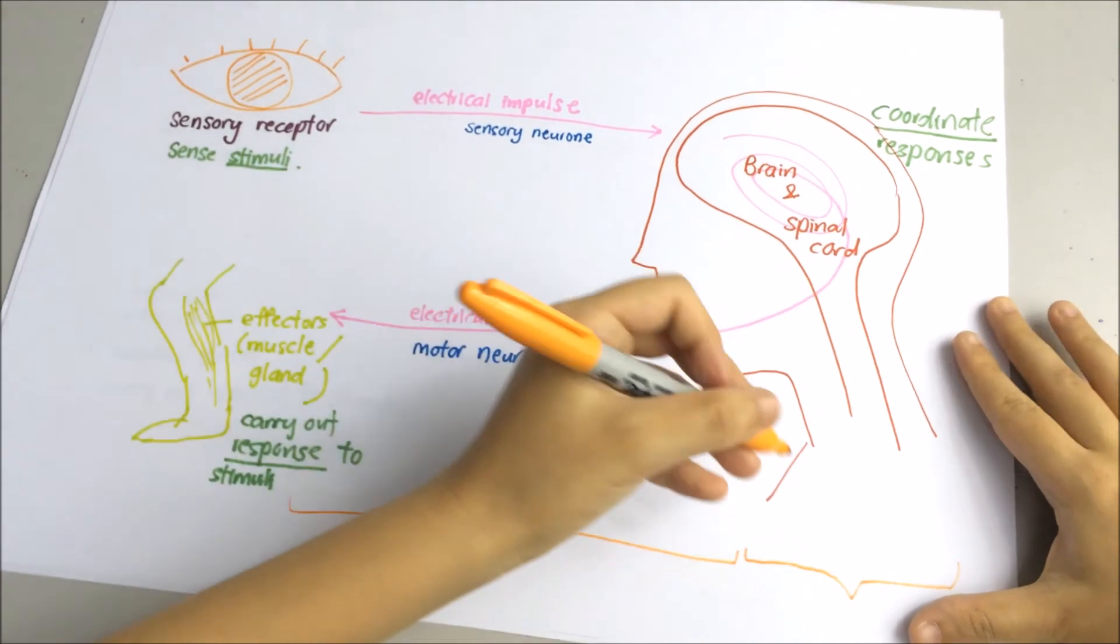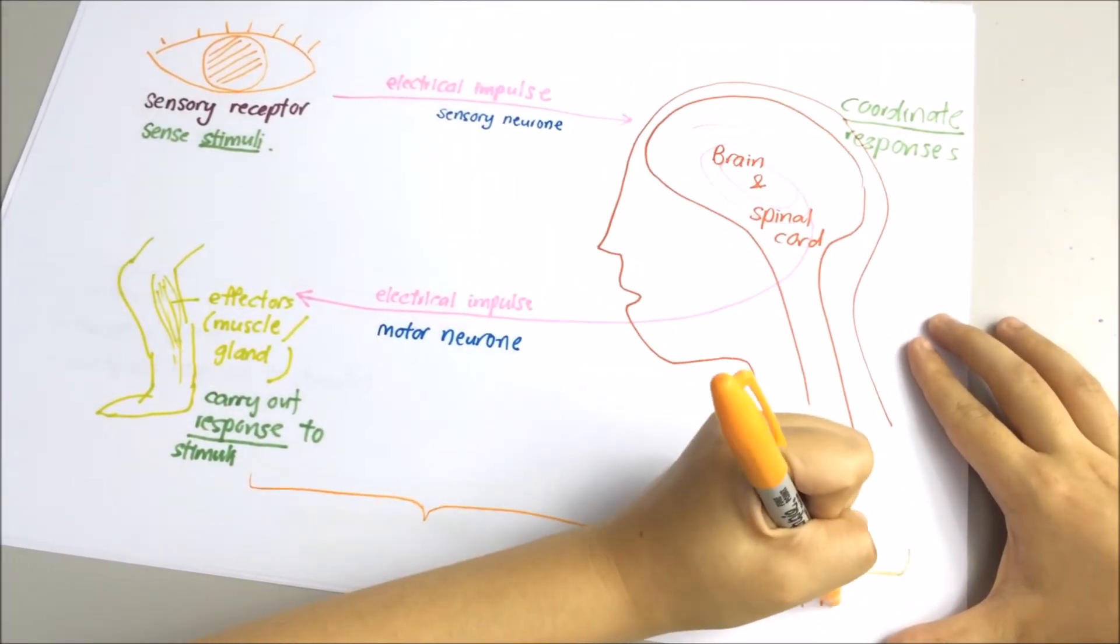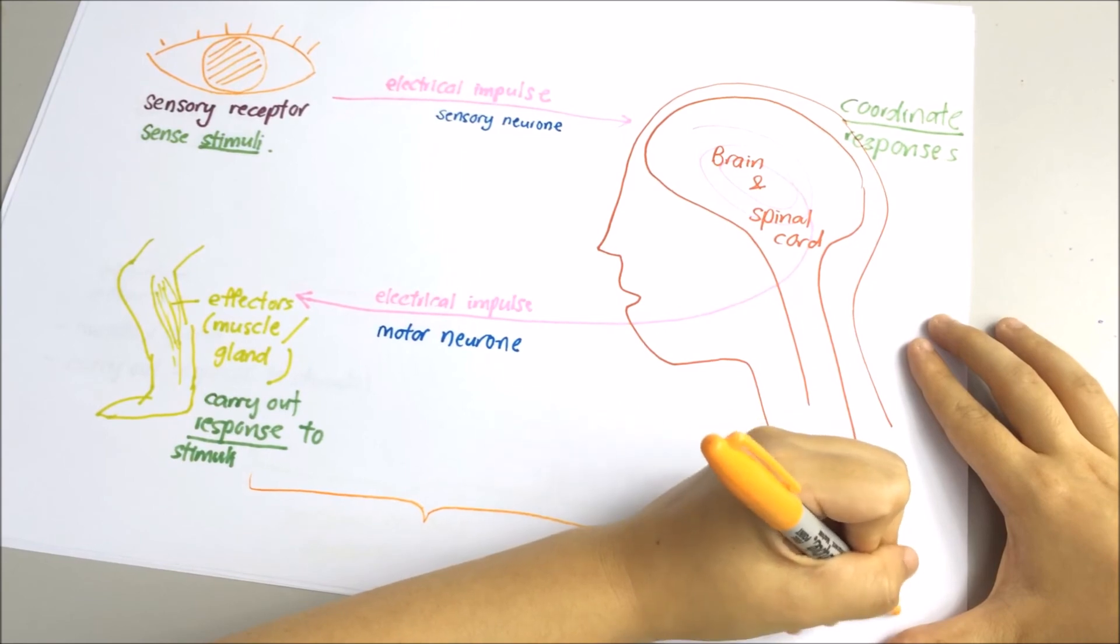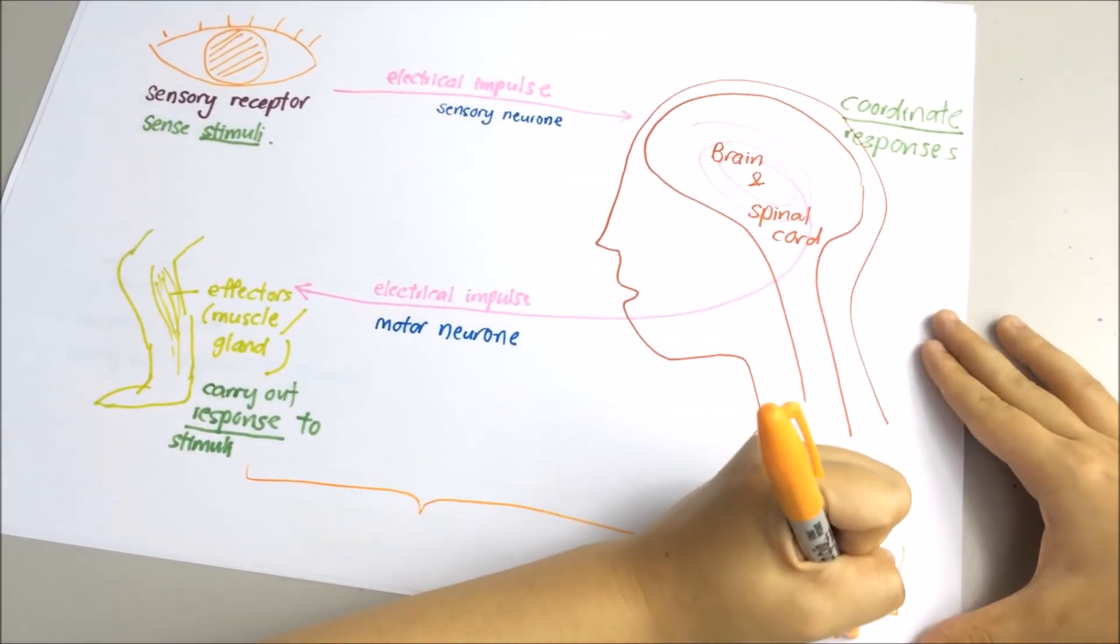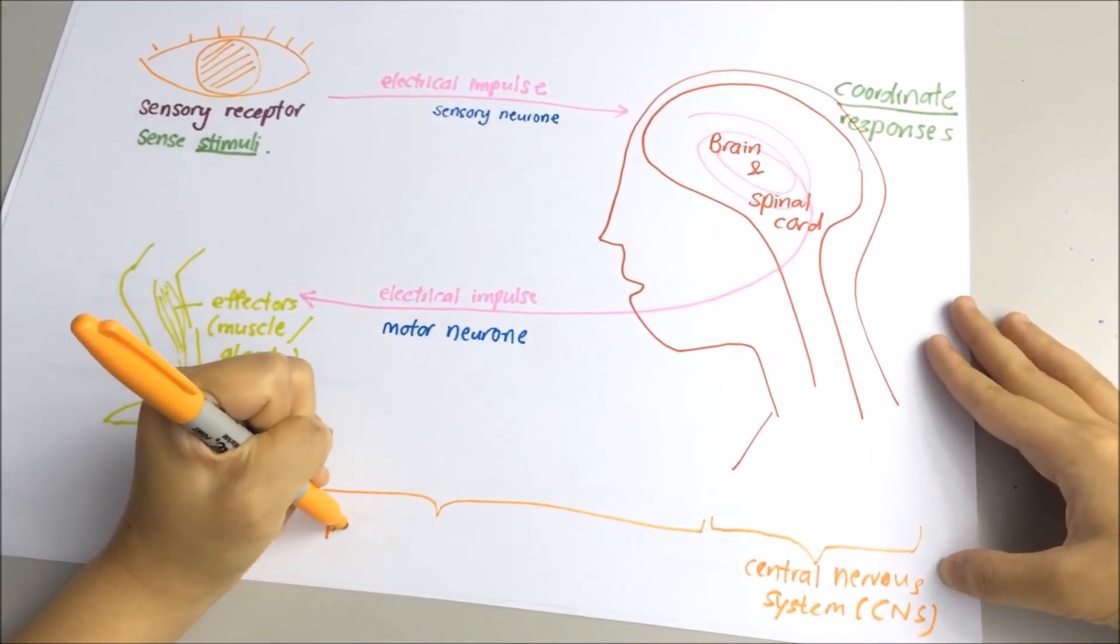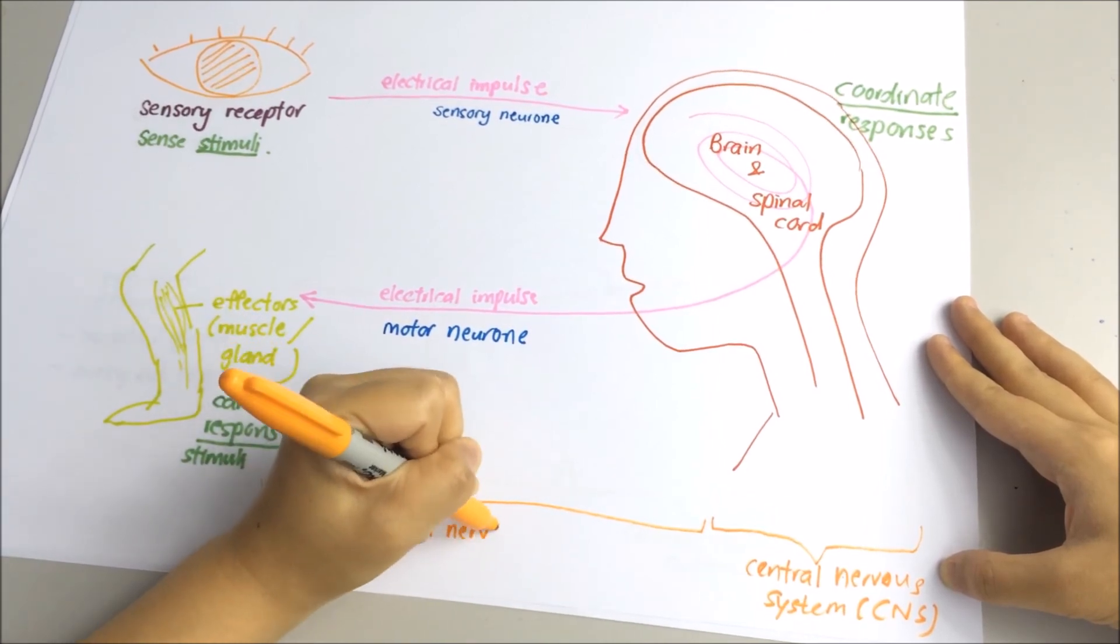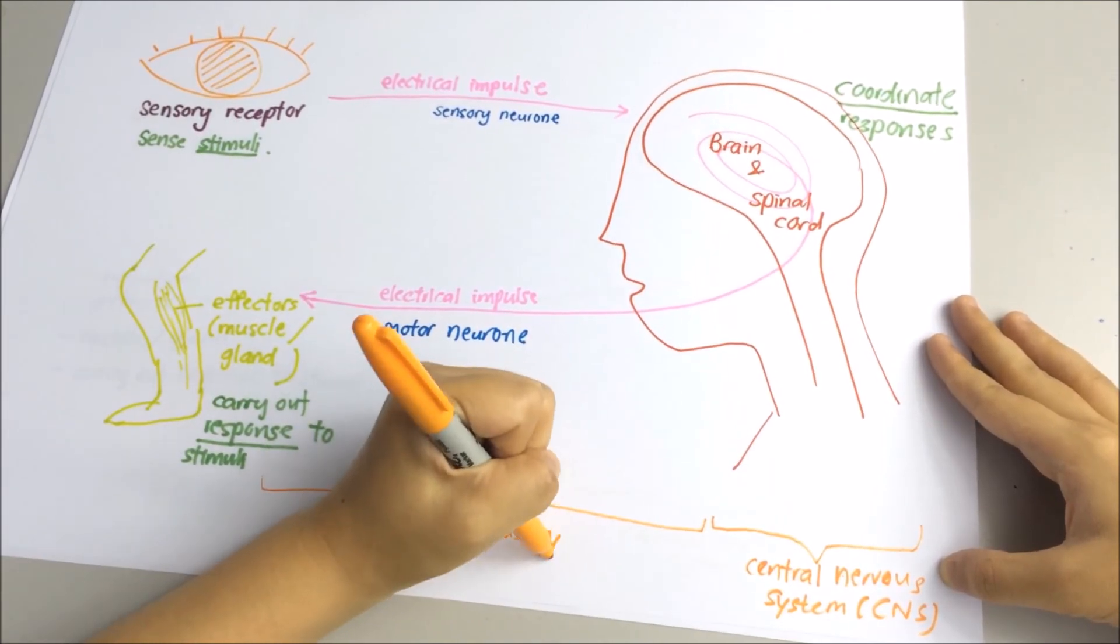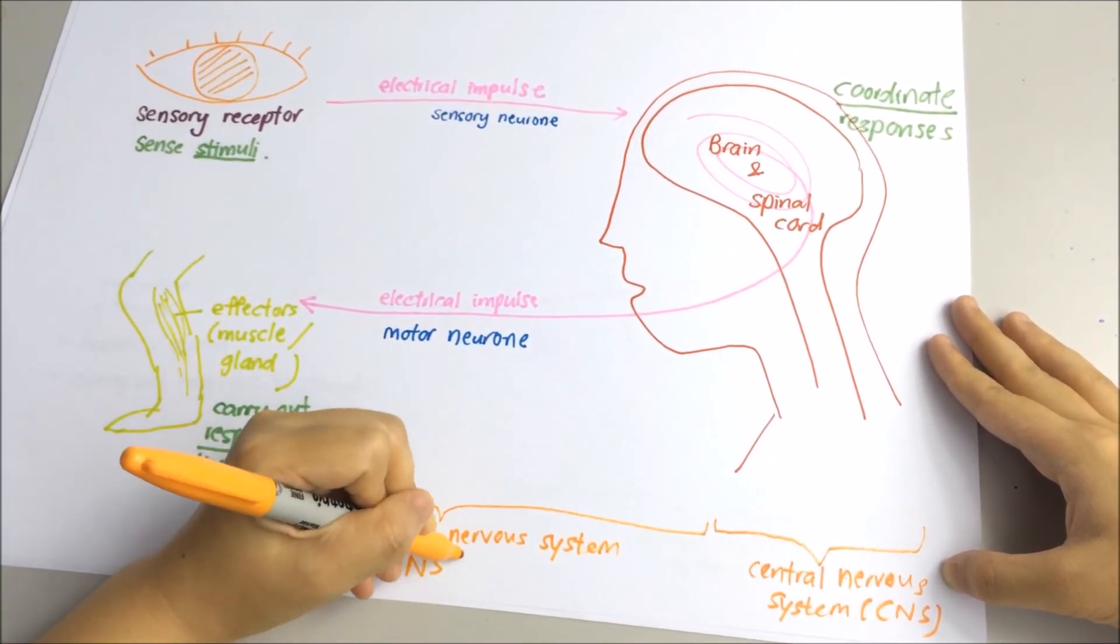So, this part is known as central nervous system. This is the part where the information is processed and interpreted. And this part is known as peripheral nervous system, which includes your sensory neuron and also motor neuron.